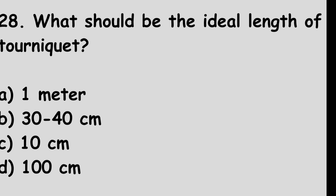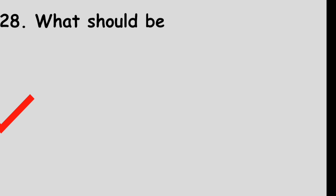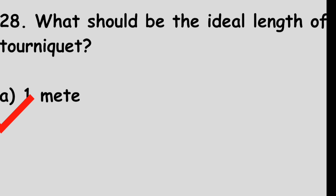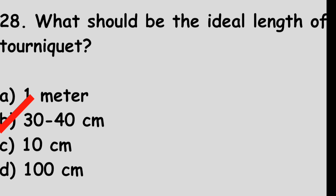Question number 28: What should be the ideal length of a tourniquet? Option A: 1 meter. Option B: 30–40 centimeters. Option C: 10 centimeters. Option D: 100 centimeters. The right answer is option B, 30–40 centimeters.